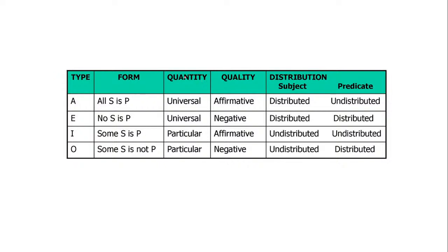For quantity and quality: 'All S is P' — quantity is universal; 'No S is P' — quantity is universal; 'Some S is P' — quantity is particular. For quality: 'All S is P' is affirmative; 'No S is P' is negative; 'Some S is P' is affirmative; 'Some S is not P' is negative. If you see the word 'no' or 'not,' it is a negative statement.